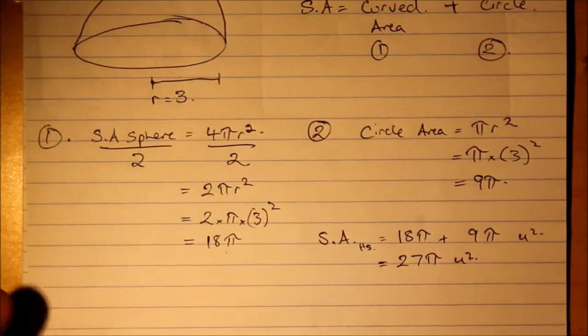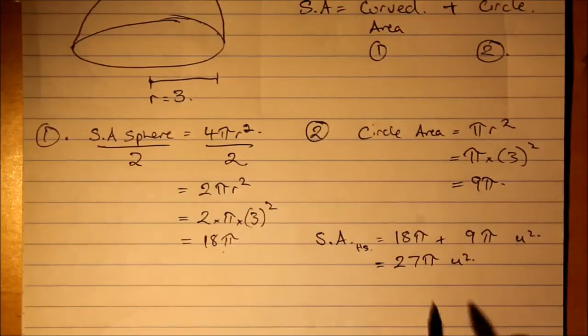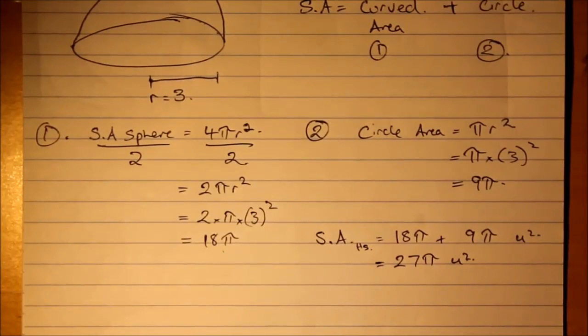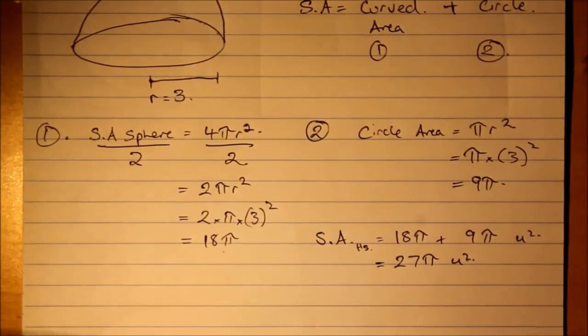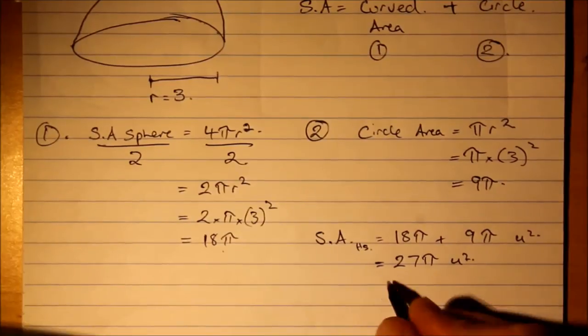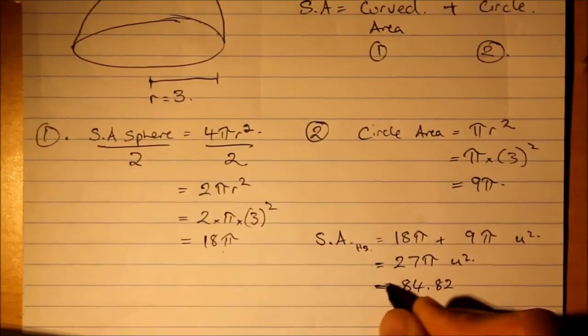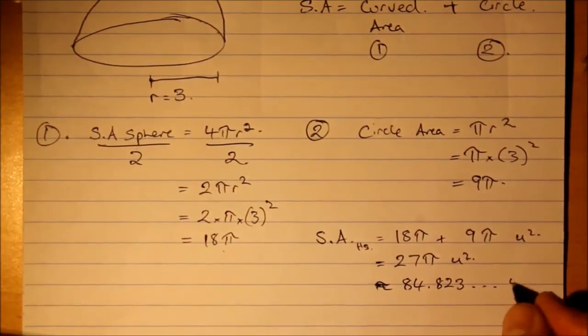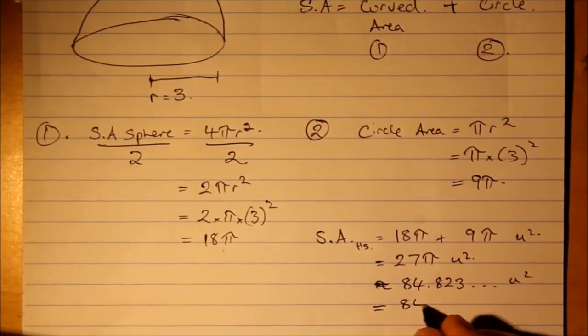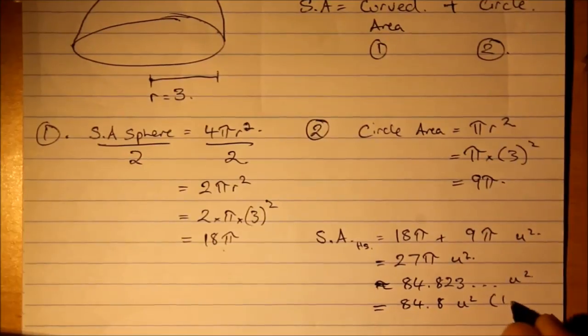What is that to, let's say, 1 decimal place? It's going to be pretty close to 90, 20, 30 times 3. So, let's have a look. 27 times pi. 84.82, we'll make that approximate, which is 84.8 units squared to 1 decimal place.